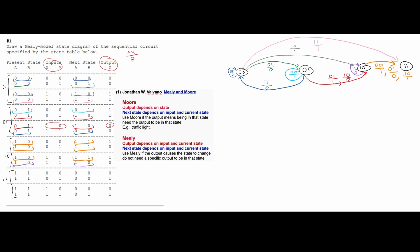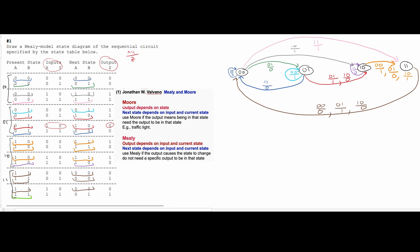Next, we have 11 going to 00, with inputs 00 and output 0. Same destination again: 11 to 00, with inputs 01 over output 1. And again 11 going to 00, with inputs 10 and output 0. Lastly, we have 11 going to 01, with inputs 11 over output 1. And that's how we draw our Mealy model state diagram for the sequential circuit with the specified state table.